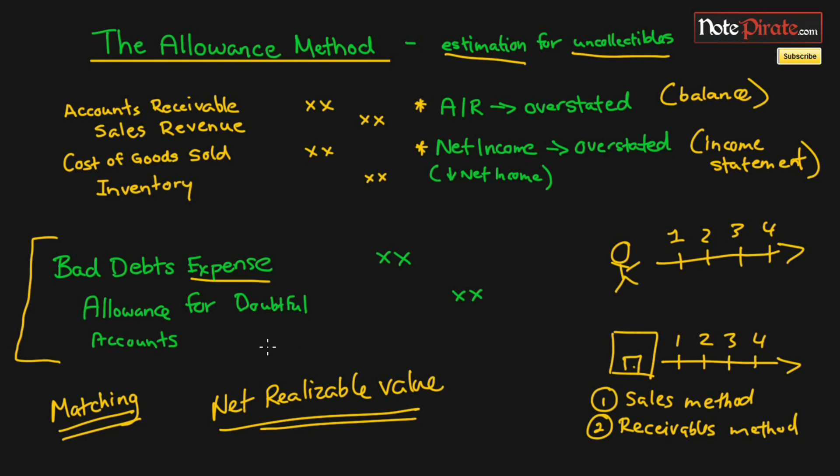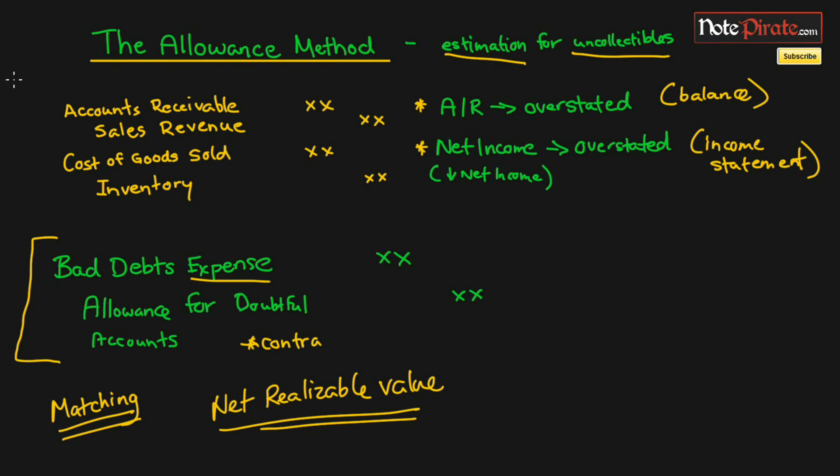I wanted to remind you one last time that this is a contra account. A contra account is just an account that completely offsets another account. If accounts receivables has $600,000 and we have a contra account allowance for doubtful accounts with $20,000 that we think will be uncollectible, our final AR value will be $580,000. Contra accounts are always next to the account that they pertain to on the balance sheet.